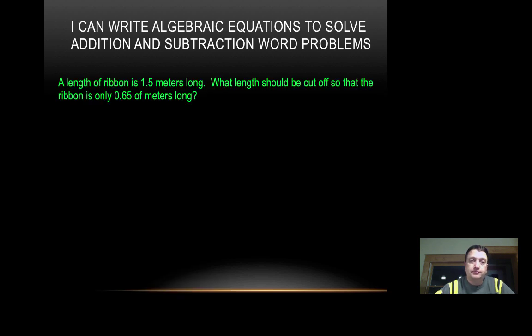Let's look at our next one. A length of ribbon is one and five-tenths meters long. What length should be cut off so that the ribbon is only sixty-five hundredths of a meter long? So what algebraic expression would represent this problem? Well, I've got one and five-tenths meters minus some amount of the meter will give me sixty-five hundredths of a meter.